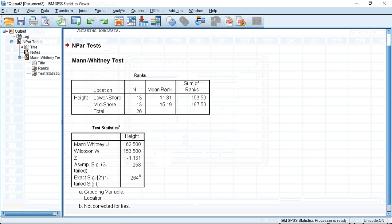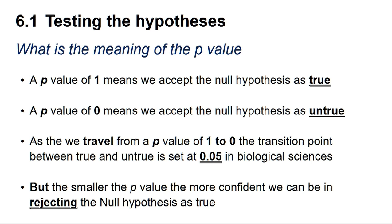As we can see, a data window opens. The value for the Mann-Whitney U is 62.5, and the significance, as given by the ASYM SIG two-tailed, is 0.258. So what is the meaning of the p-value?